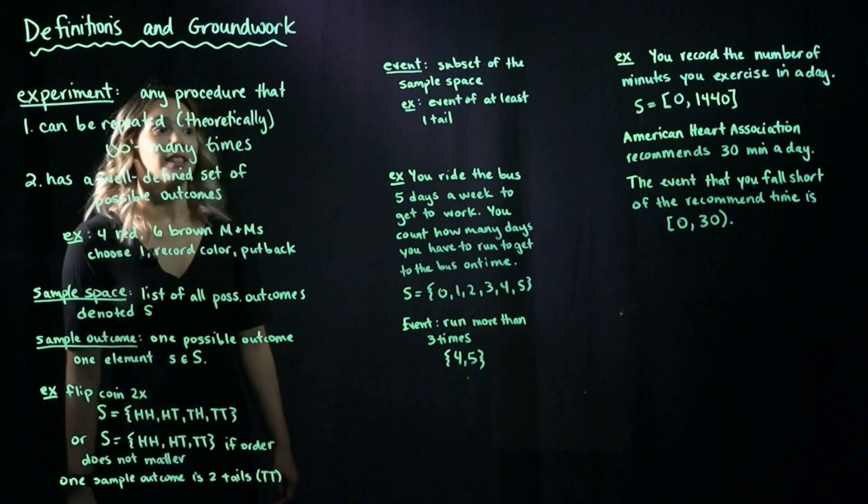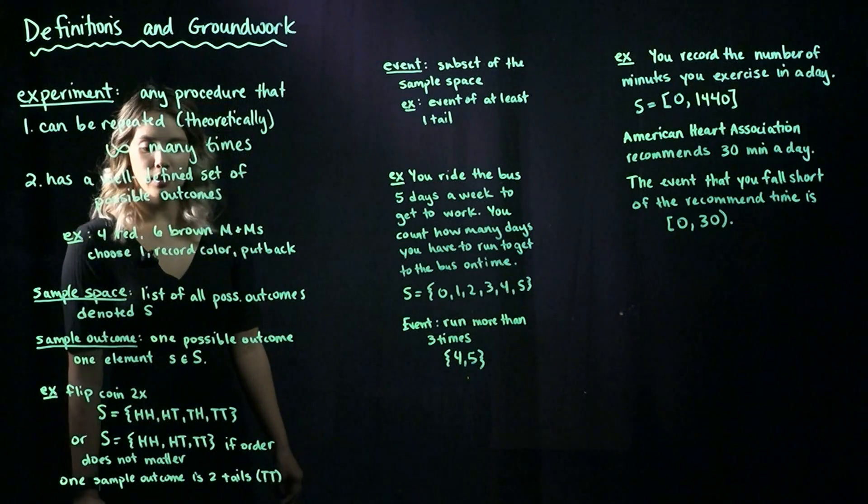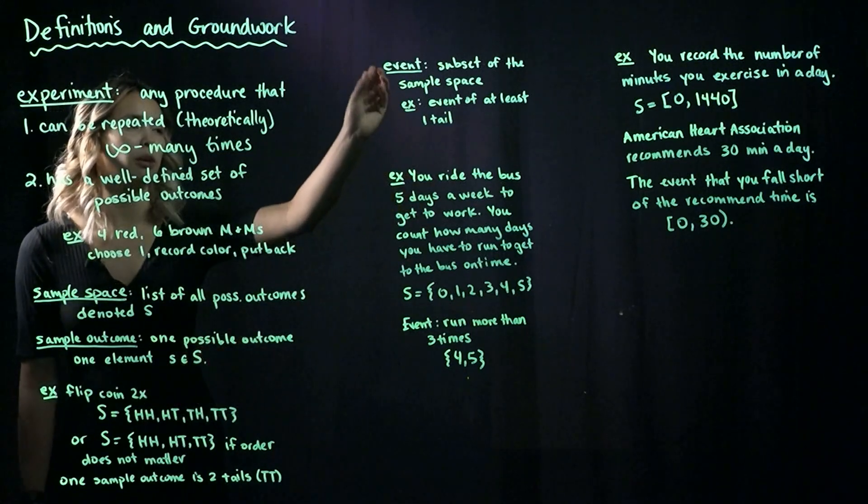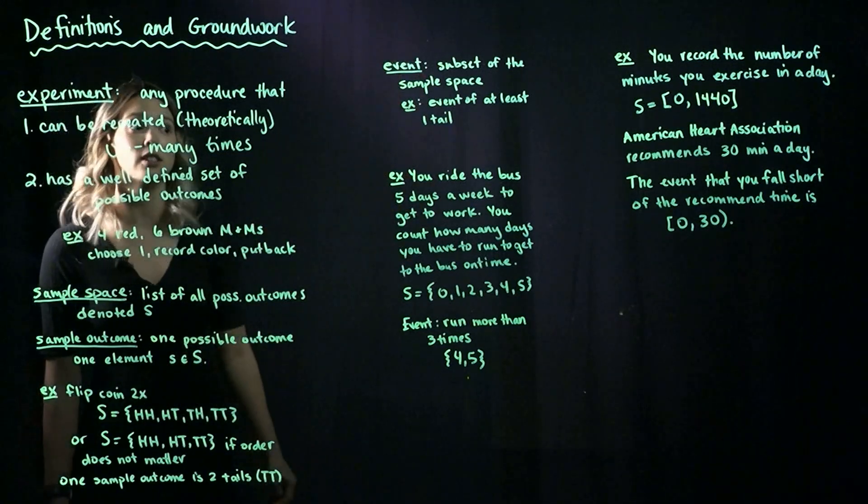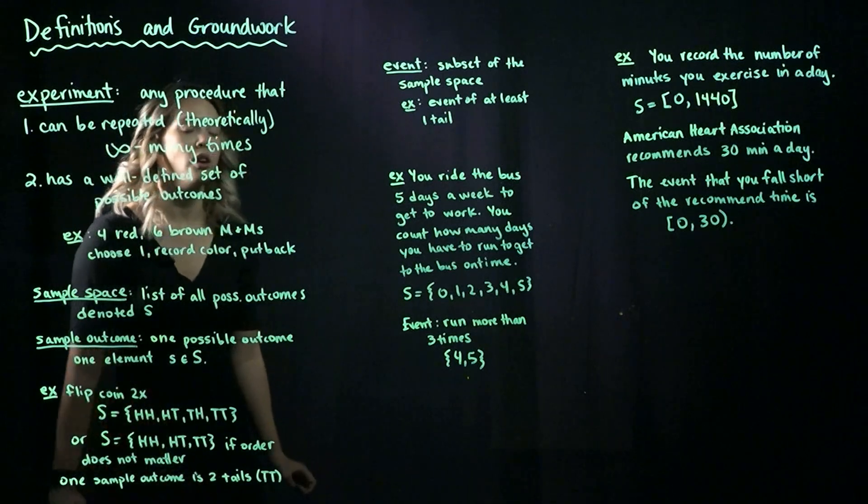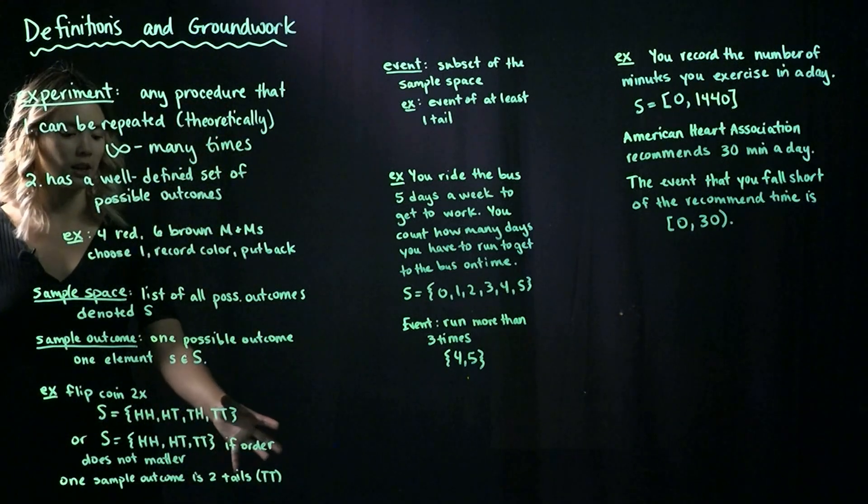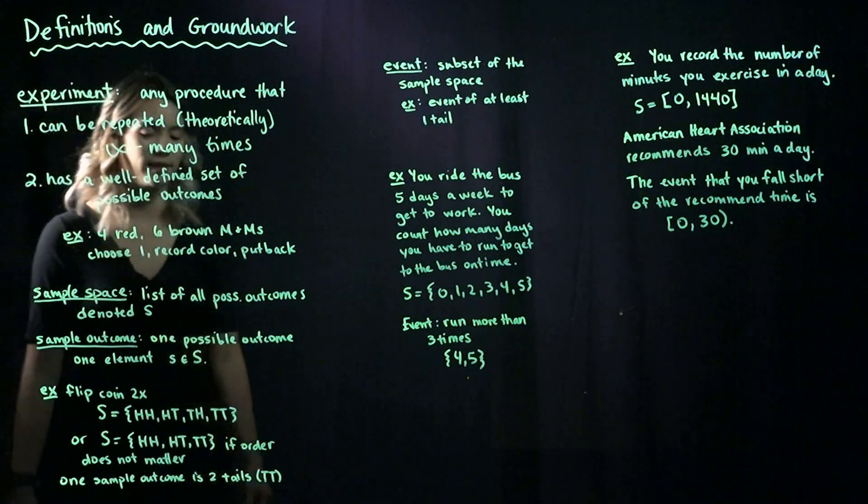Next, let's look at a subset of the sample space. If we want to take some of the elements of the sample space, then we would call that an event. So an event is just a subset of the sample space. For example, if we want to take one subset here, we could take the event of at least one tail.